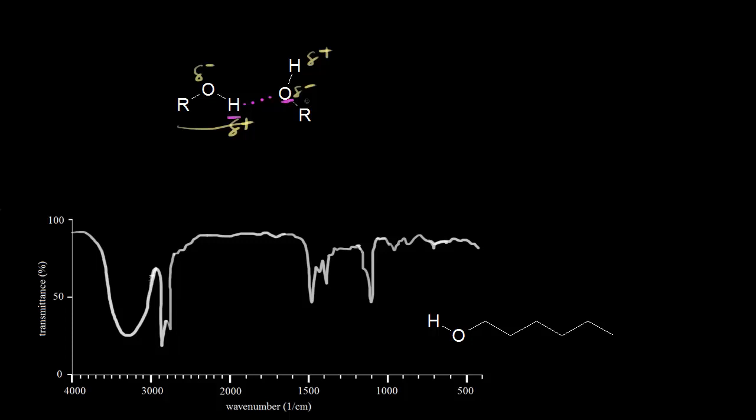This attractive force — since this hydrogen is being attracted — is going to weaken this oxygen-hydrogen bond. So hydrogen bonding weakens the oxygen-hydrogen bond. And if we're weakening the strength of a bond, that's like decreasing the force constant or the spring constant. As we saw in an earlier video, if you decrease k, you're going to decrease the frequency or decrease the wave number, and so the signal is going to change on your IR spectrum.